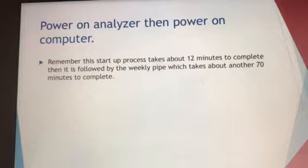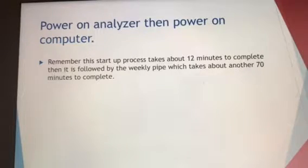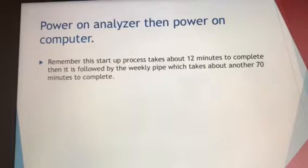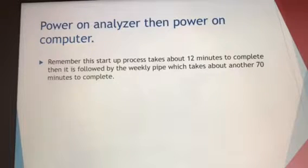Now power on the analyzer: go to the computer, click the power-up button, and once you see it turning on, flick the switch to turn on the analyzer. The startup process takes about 12 minutes. Our chemistry supervisor has programmed the analyzer so that once it's shut down, it will automatically go into the weekly pipe, which takes about 70 minutes to complete. Make sure everyone in the lab knows it's weekly maintenance day so they're aware it will take a little longer than usual.